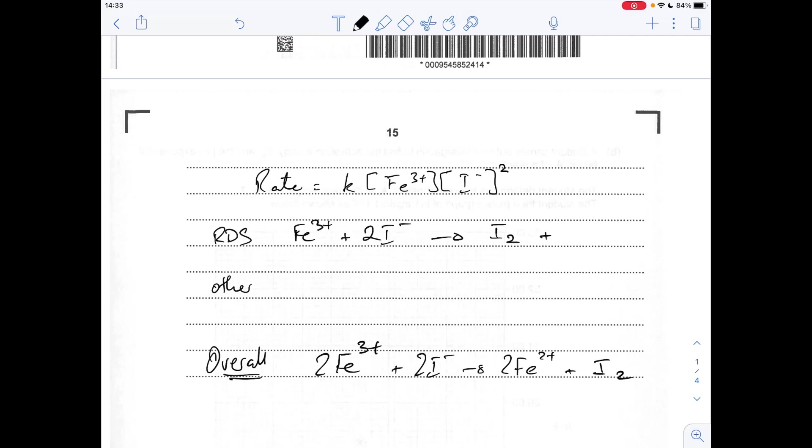So to get this to balance, I obviously need Fe. But we've got to be careful with the charge now. So at the moment, I've got on the left, 3+ and 2 minus, so 1+ charge on the left. I've got no charge on the right, so that needs to be an Fe+.